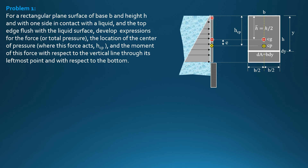This is the pressure diagram: zero at the top since it is exposed to the atmosphere, then maximum at the bottom — gamma times H, the maximum intensity of pressure. At the level of this differential area, at distance y, the intensity of pressure is specific weight times vertical height y. The pressure there is uniform and constant because it acts over a differential area with elements equidistant from the liquid surface at depth y.